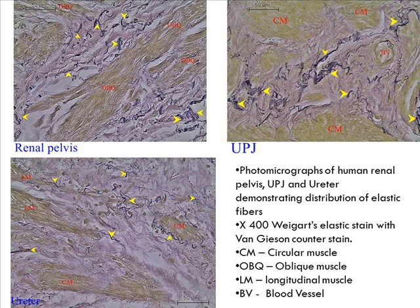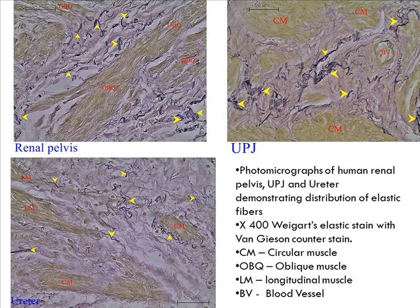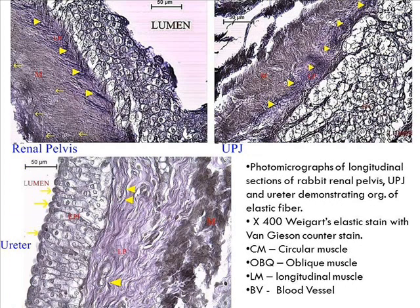For the connective tissue, I focused mainly on the elastic tissue, using Weigert's elastic staining. At the renal pelvis, we can see elements of elastic tissue interposed within the smooth muscle. At the UPJ, the elastic fibers are thicker and more distinct compared to those of the ureter. In the rabbit, the muscularis is very compact, the elastic tissue is confined to the lamina propria, and the density was not increased coming from the renal pelvis to the UPJ into the ureter.